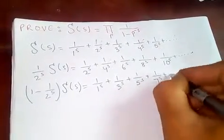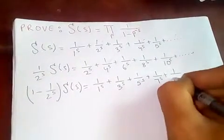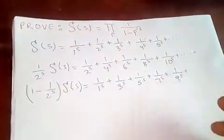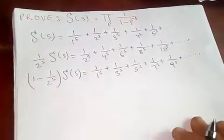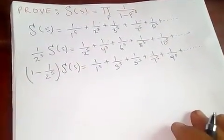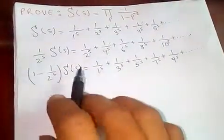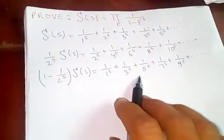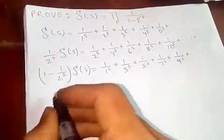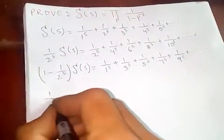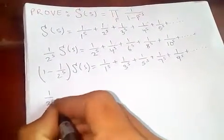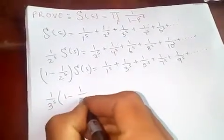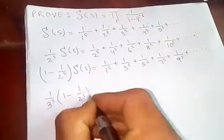Now again, if I multiply both sides by 1 over 3 to the s: 1 over 3 to the s times 1 minus 1 over 2 to the s times zeta of s gives us multiples of 3 in the series.